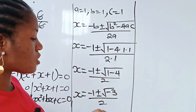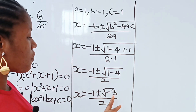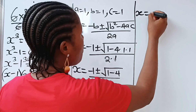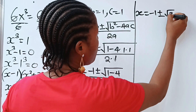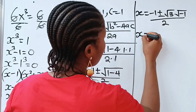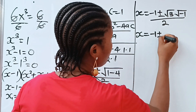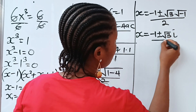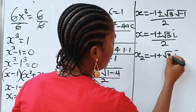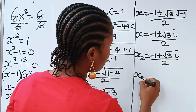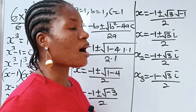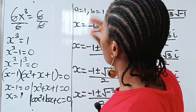Now, look at what we have here. We have two values of x. Note that we can rewrite root minus 3 as the square root of 3 multiplied by the square root of minus 1, which gives us square root of 3 times i. So x equals minus 1 plus or minus root 3i, all divided by 2. The second value of x is minus 1 plus root 3i divided by 2, and the third value of x is minus 1 minus root 3i divided by 2. Now it's time to check.